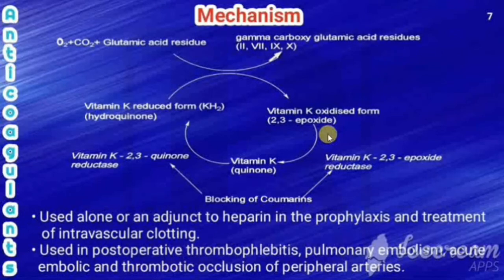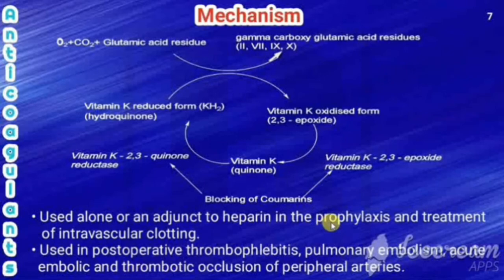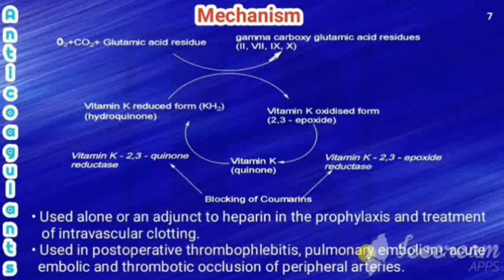The uses of coumarin derivatives: they are used alone or as an adjunct to heparin in the prophylaxis and treatment of intravascular clotting. They are also used in post-operative thrombophlebitis, pulmonary embolism, and acute embolic and thrombotic occlusion of peripheral arteries.